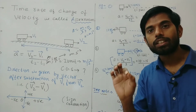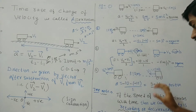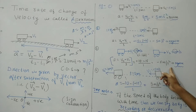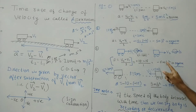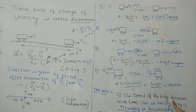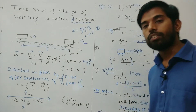Retardation means there is a decrease in speed. In both examples retardation is 5 m/s². Retardation or deceleration is 5 m/s². Important note: if the speed of a body decreases with time, we can say the body is retarding or decelerating.